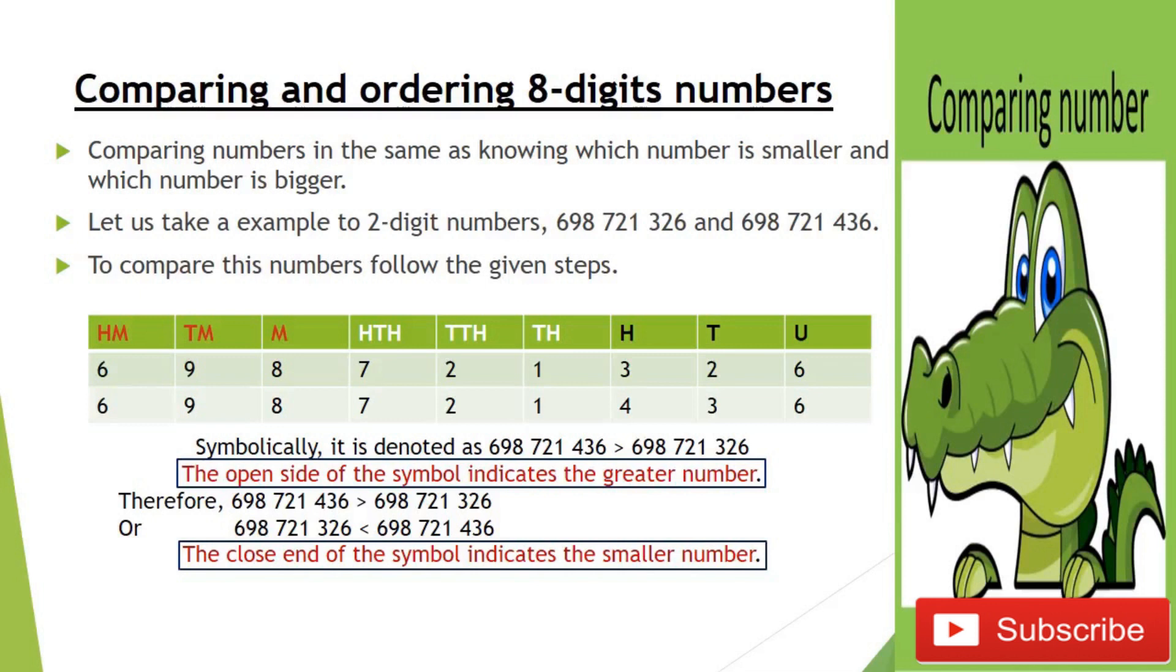If we compare two numbers up to eight digits, first we make the place value chart to define easily each number's place value. If we read any number, we start from the left hand, but if placing any number, we start from the right-hand side. Look at the right-hand side, the number difference between the hundreds value of digits. The open side of the symbol indicates the greater number, and the closed side of the symbol indicates the smaller number. When we change into ordering form, first we write the greater number, then the smaller, so the number automatically changes into the ordering form.